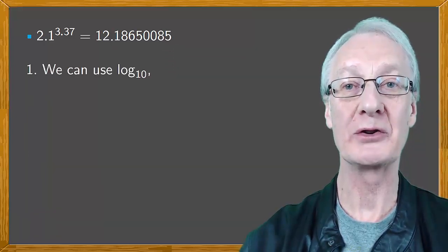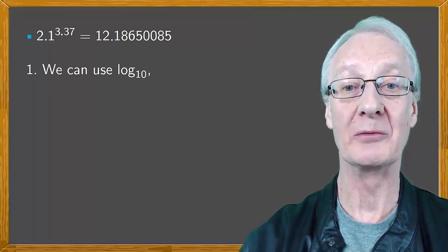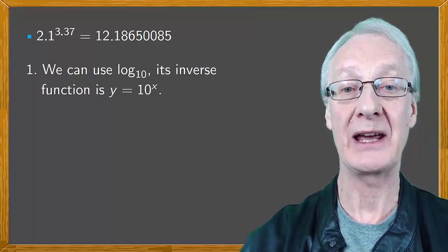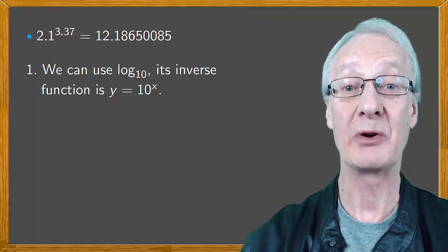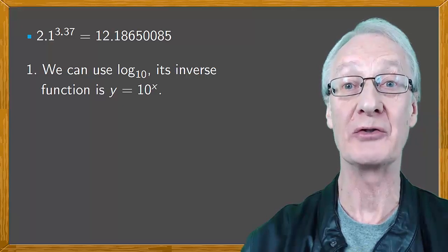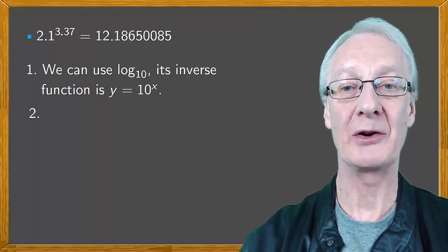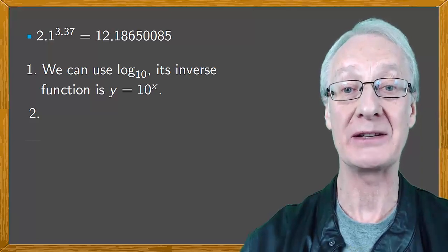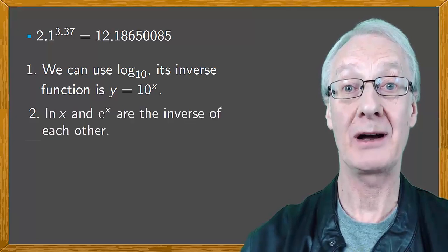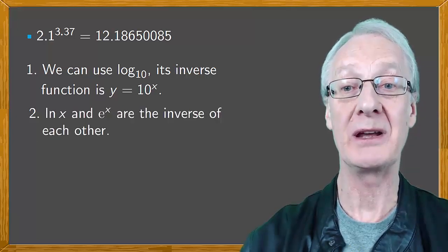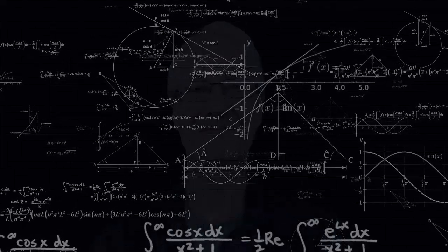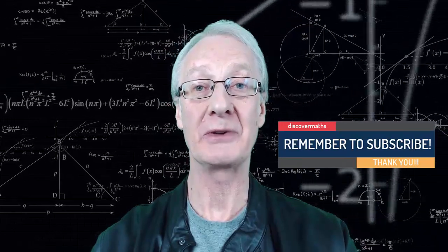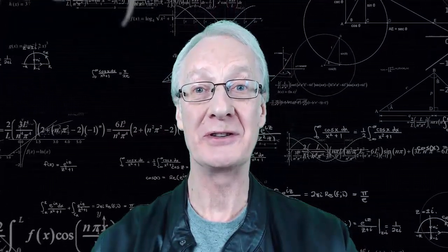Two things to notice. First of all, we could have used decimal logs — in fact, they're the ones that normally appear in log tables. So when applying the inverse function, this would be y equals 10 to the x. In fact, we could use logarithms to any base, providing we apply the corresponding inverse exponential function. The second thing to be aware of, even though we've not made a big deal of it, is that the logarithm and exponential functions are bijective in their domains, and of course are the inverse of each other. That's why we can use them in the way that we have done. And I'll catch you again very soon to discover more maths.